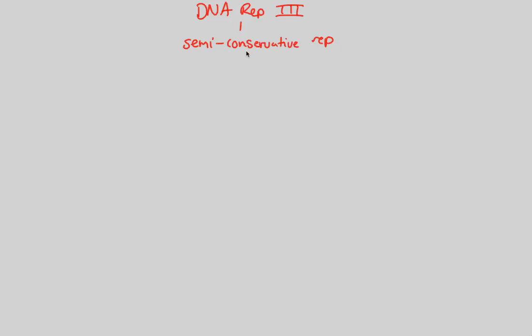There are two parts to semi-conservative replication: initiation, which we covered in our previous video, and now we're going to be looking at number two, which is elongation.